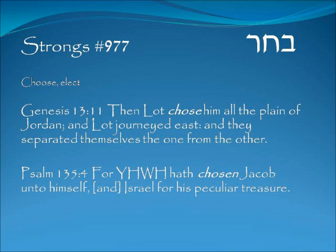Genesis 13:11 — then Lot chose all the plain of Jordan, and Lot journeyed east, and they separated themselves the one from the other. So Lot was able to look at the different parts of the land and he chose, he picked out the part he wanted to live on. Psalm 135:4 — 'For Yahweh had chosen Jacob unto himself, and Israel for his peculiar treasure.' So at some point the Lord made a choice of who he wanted to be his people.